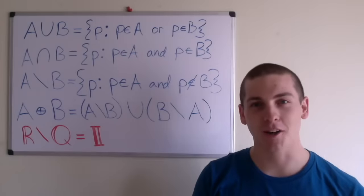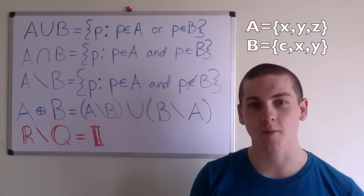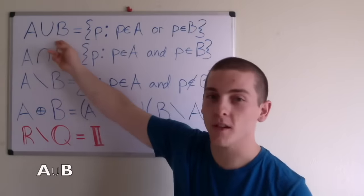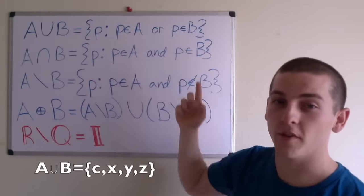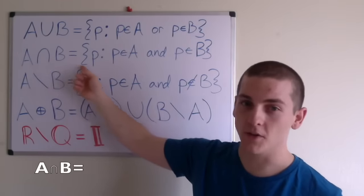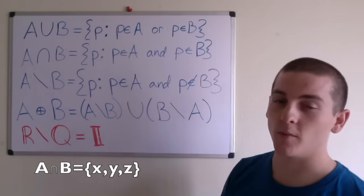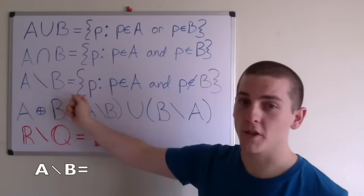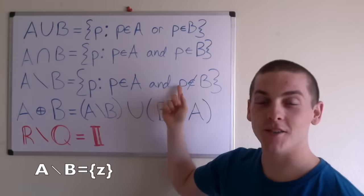In this video, I'll be defining 4 binary operators for sets. I've defined two sets, A and B, to help give some examples. So the first is A union B, which equals the set containing elements p such that p is an element of A or p is an element of B. The next is the intersection: A intersection B equals the set containing elements p such that p is an element of A and p is an element of B. The next is the set difference of A and B, which equals the set containing elements p such that p is an element of A and p is not an element of B.